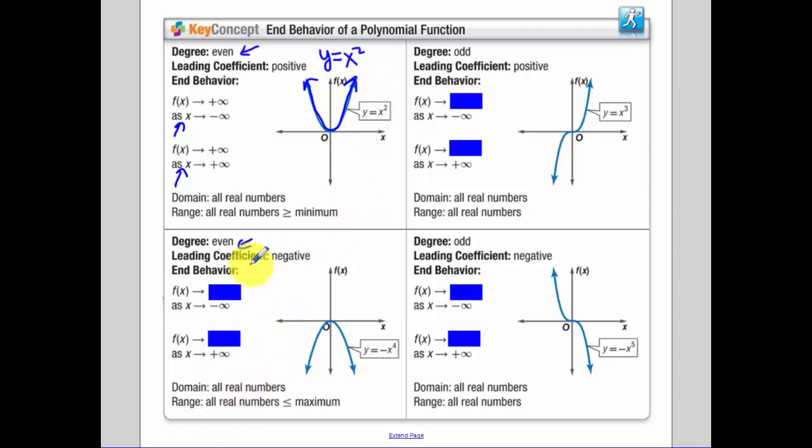But you guys know that when you have an even degree and your leading coefficient is negative, your parabola is going to open down, which means that as you go to negative and positive infinity, as the x's get really really small and really really big, both of those, you're going to negative infinity.